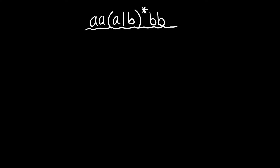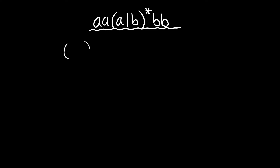Parentheses always come first — do whatever's in parentheses first. So we have our A and B inside the parentheses first. The Kleene star takes precedence over concatenation with our A's and B's. So let's break it down to just a simple A — let's make a machine that accepts an A.